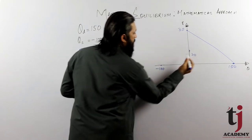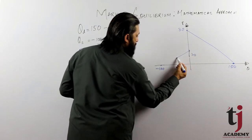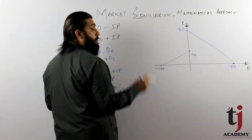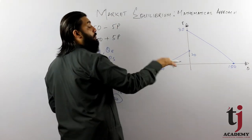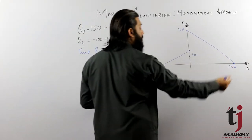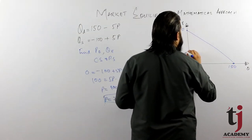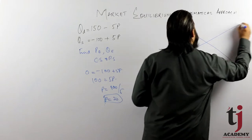If you have these points, you can draw the supply curve. Once you have the supply, you extend it. These intersection points are what we are interested in.